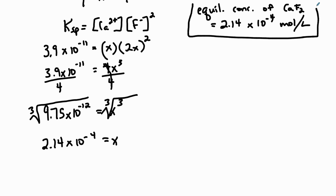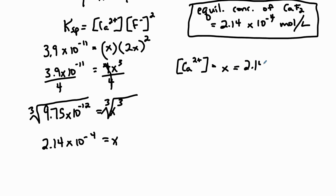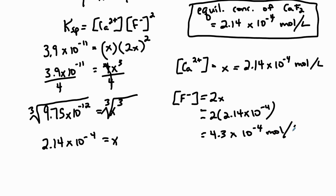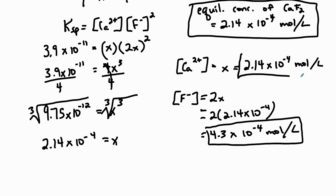We can also calculate the concentrations of each ion. [Ca²⁺] = X = 2.14 × 10⁻⁴ mol/L. [F⁻] = 2X = 4.3 × 10⁻⁴ mol/L. Those are several values you can obtain from this type of question.